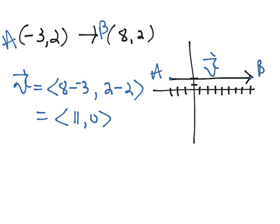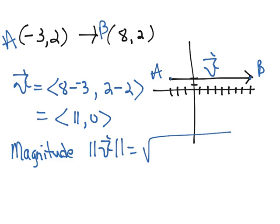And then the second part asks us to find the magnitude. And the magnitude of v would be written in this notation. And that's going to be equal to, you subtract the x's, square them, plus you subtract the y's and square them. Basically it's just the distance formula.